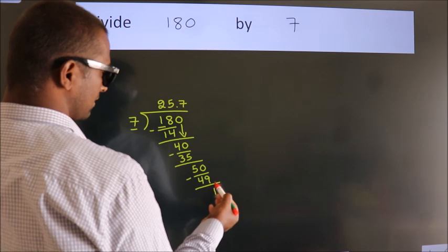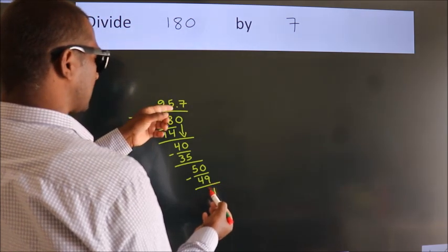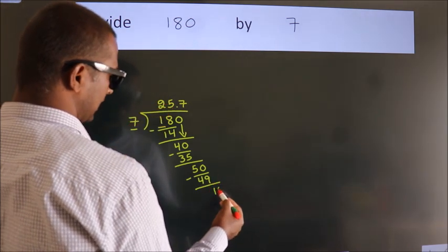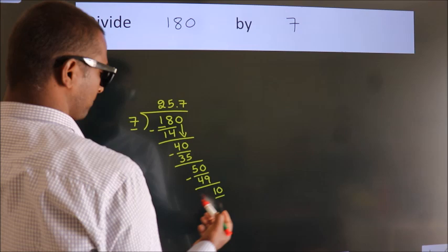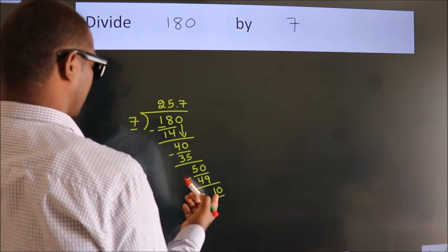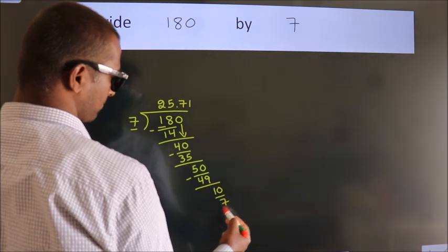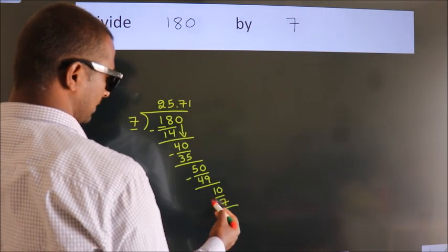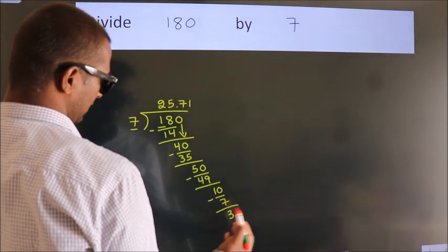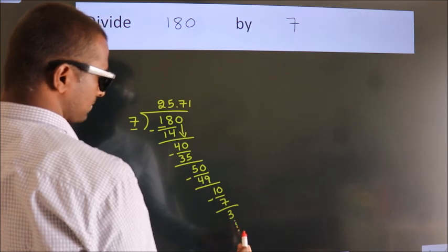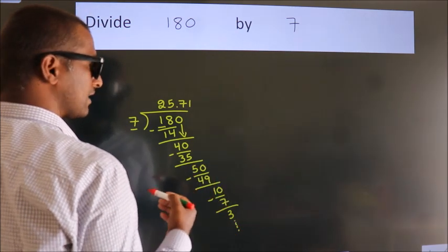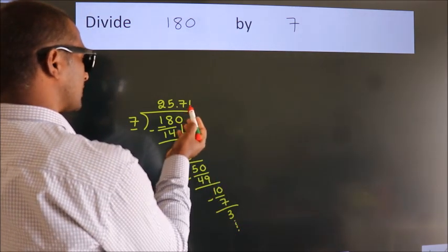After this, we already have the decimal, so directly take 0. So 10. A number close to 10 in the 7 table is 7 ones, 7. Now we subtract. We get 3. And the division continues. It is enough if we do up to 2 decimal places.